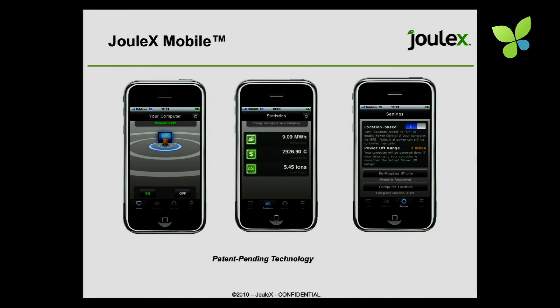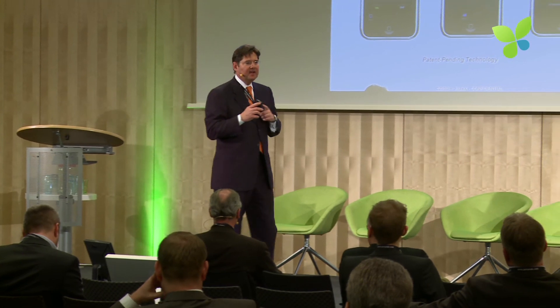We've built innovative ways for users to control their own power. Here on my iPhone, I've got the Julex mobile app — you can download it from the Apple iPhone App Store. Our customers allow their employees to opt in. When the employee gets close to their building, it turns on their computer, their lights, changes their heating or air conditioning. And when they leave through GPS resolution, it automatically controls those devices. It shows each employee how much energy, carbon, and money they're saving by power-stating their equipment.